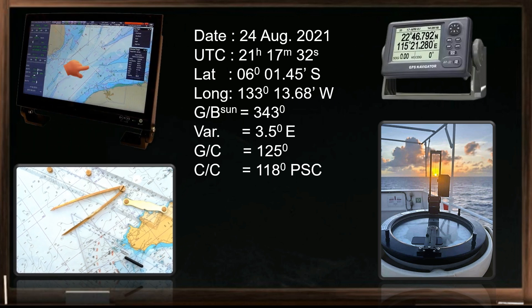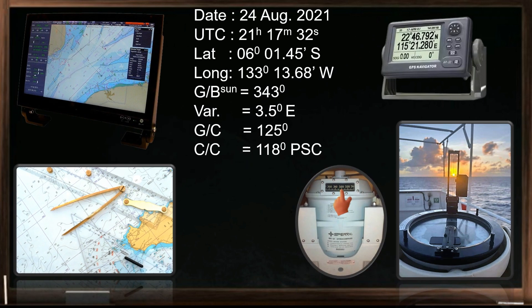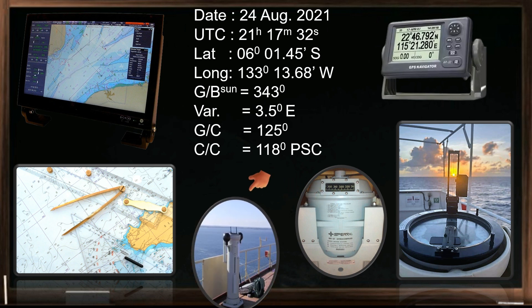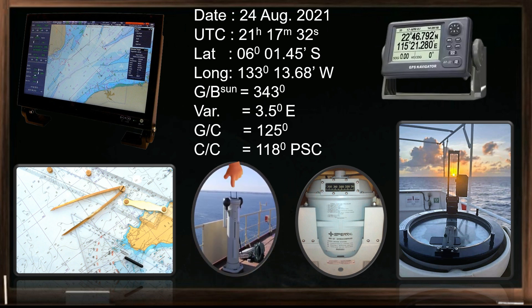Take the variation from the navigational chart or from the ECDIS. The gyro course can be taken from the master gyro compass. The compass course is taken from the ship's magnetic compass. PSC means per standard compass, and it refers to a reading from the ship's magnetic compass.